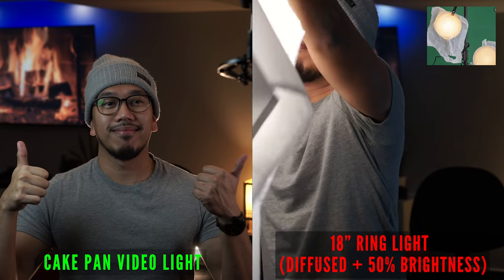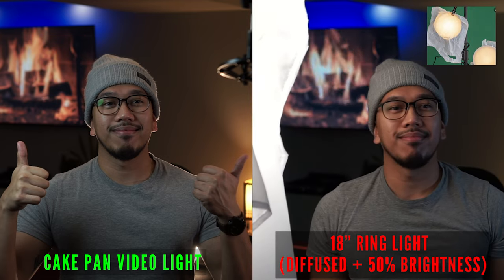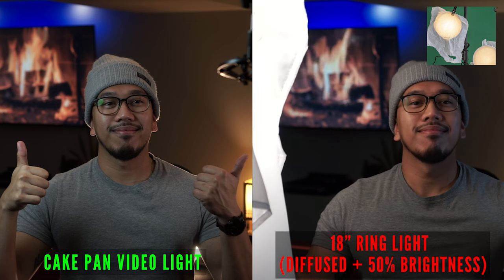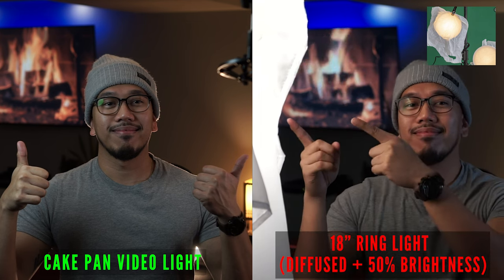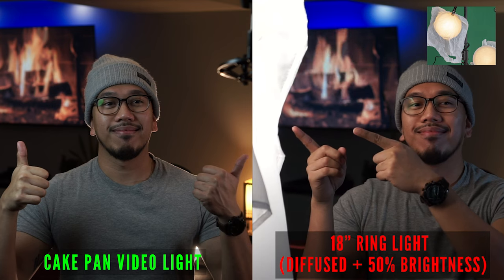Adding a sheet of the diffuser and toning down the brightness to 50% drastically improved the 18 inch ring light. This can be a great alternative for anyone who already owns the ring light.